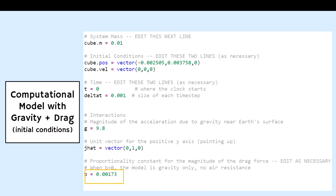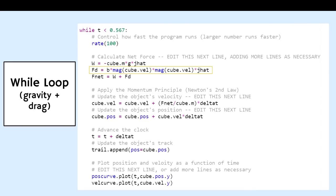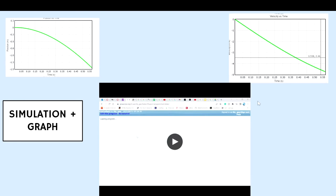Here's the initial conditions for the computational model with gravity and drag, noting that the proportionality constant is 0.00173 since we are accounting for drag now. And here's the while loop, noting that the drag force is the proportionality constant times the magnitude of velocity squared, which is also speed times the direction. And here's the simulation and graph.